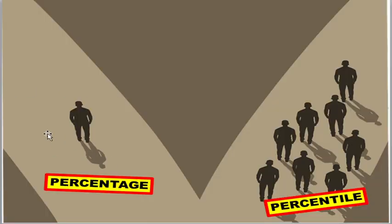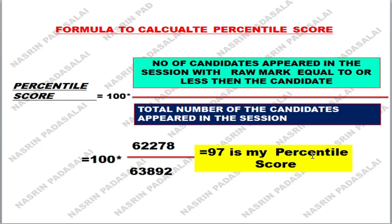So percentile deals with the individual — individual marks are taken into account and compared with all others who appeared for the exam. Percentage is applicable only if the exam was conducted in a single shift. Percentile is incorporated when the exam is conducted in two shifts, where both shifts write different question papers. In that case, you cannot use percentage, because using it would require releasing separate results, which again creates difficulty for students.